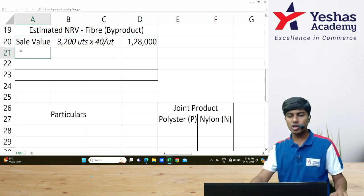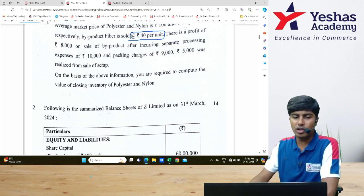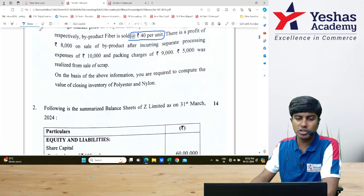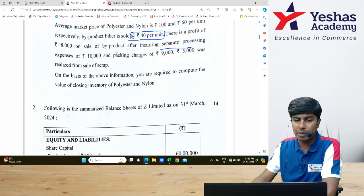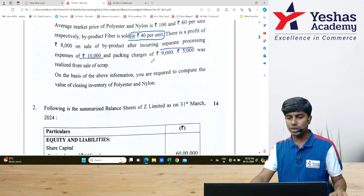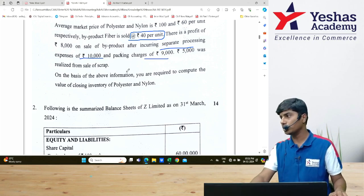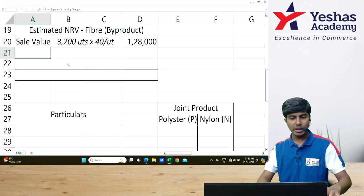From this, I will deduct the cost that I am incurring. What is the cost for this? There is a profit of ₹8,000—this is irrelevant information. Then the sale of product after incurring separate processing expenses of ₹10,000. This separate processing expense of ₹10,000 and packaging charges of ₹9,000 is expense incurred to sell the byproduct.